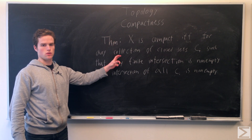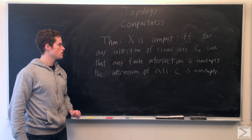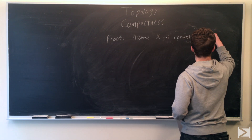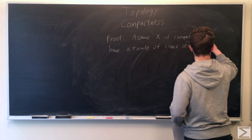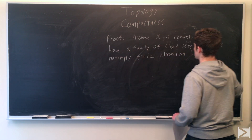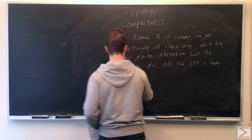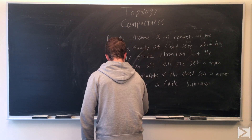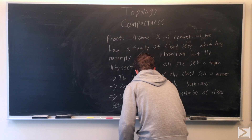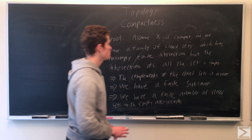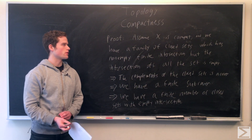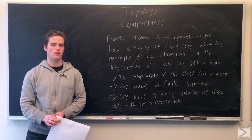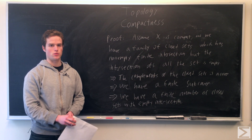If X is compact, this holds for families of closed sets. First we're going to assume X is compact, then take a family of closed sets where any finite intersection is non-empty. We're going to assume the total intersection of all the sets is empty, and show we have a contradiction.